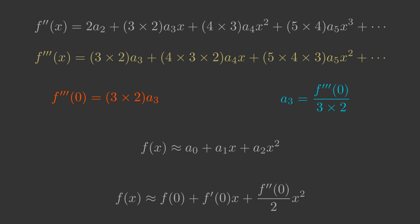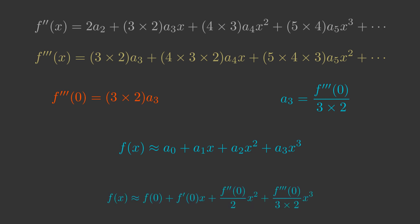We can now form the approximation f of x as a0 plus a1x plus a2x squared plus a3x cubed. So f of x is the same as before but with an extra term f3 prime 0 over 3 times 2 times x cubed.